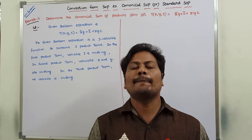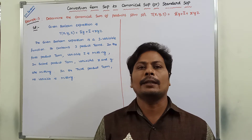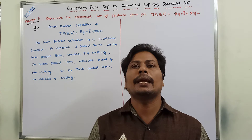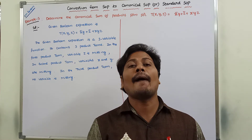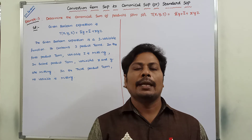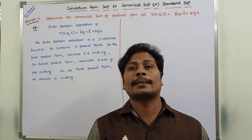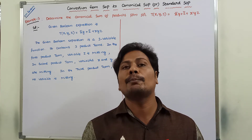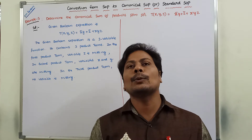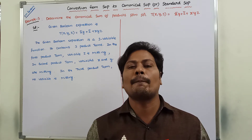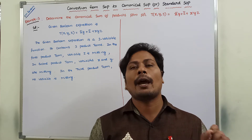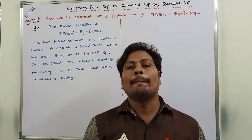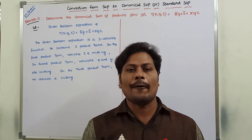Hi friends, today I am giving a lecture on an example problem on converting a given Boolean expression in SOP into equivalent canonical sum of products form. In the previous video, we already discussed the procedure we have to follow for converting a given Boolean expression in SOP into canonical SOP with two example problems. Now in this video we will solve another example problem for better understanding. Please refer the previous videos.